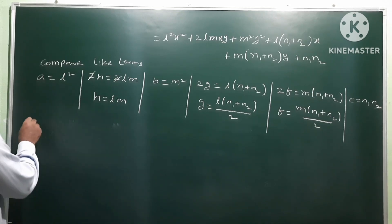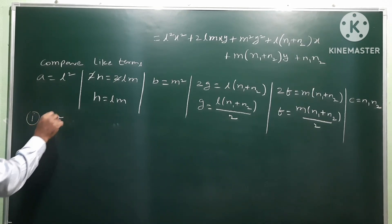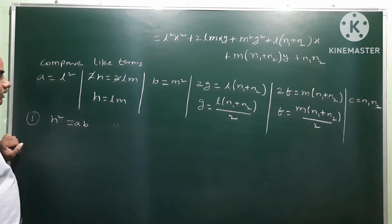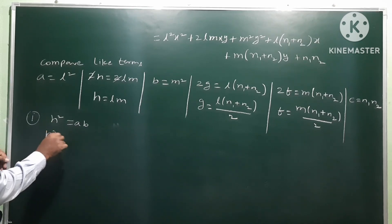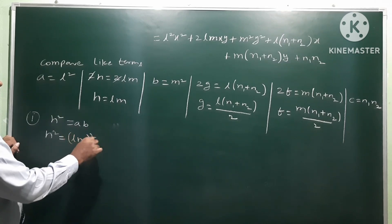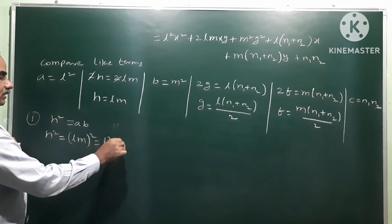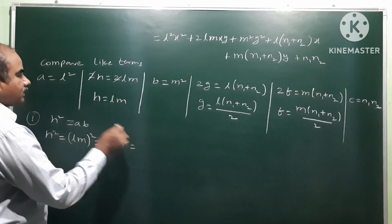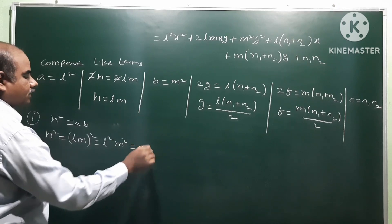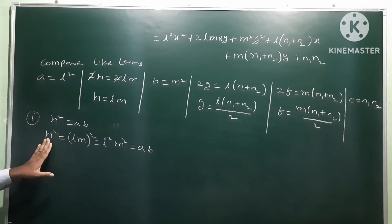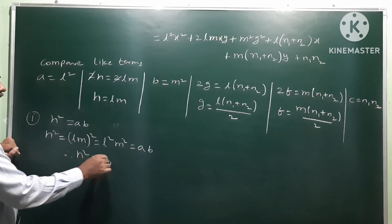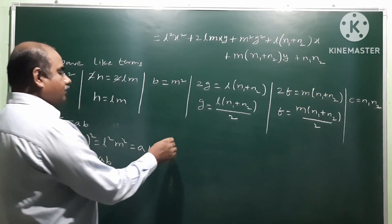Now we prove the first condition h² = ab. We have h = lm, so h² = l²m². We know a = l² and b = m², so ab = l²·m² = l²m². Therefore h² = ab is proved.